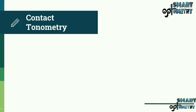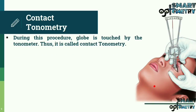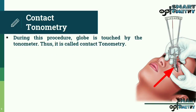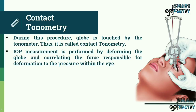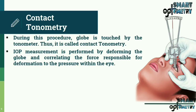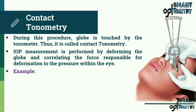Contact Tonometry: During this procedure, the globe is touched by the tonometer, hence it is called contact tonometry. IOP measurement is performed by deforming the globe and correlating the force responsible for deformation to the pressure within the eye.